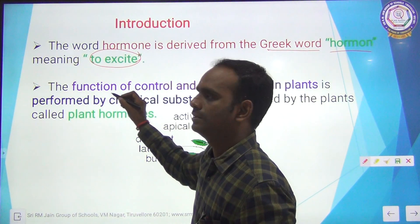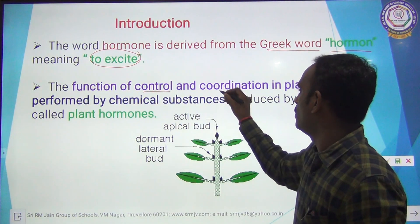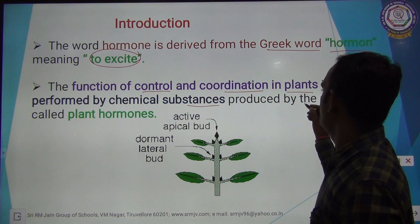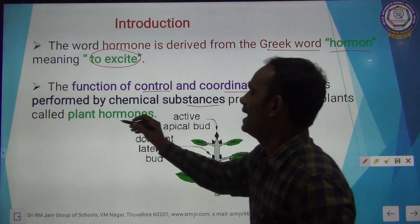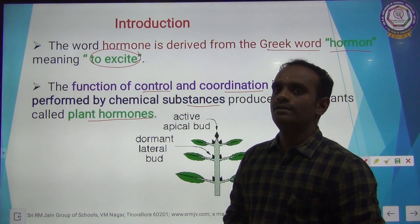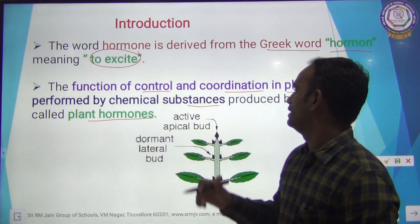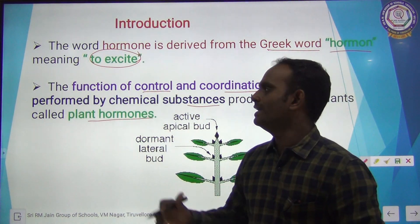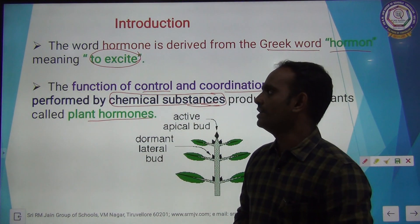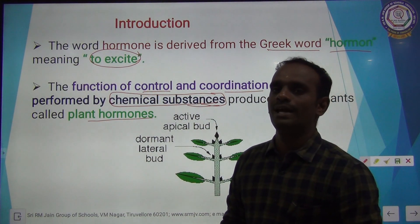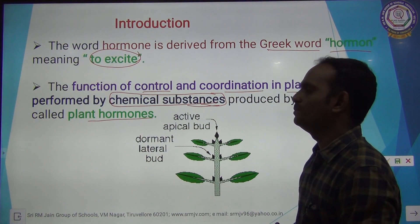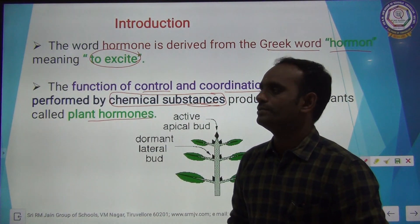The function of control and coordination in plants is performed by chemical substances produced by the plants. These are called plant hormones. The function of control and coordination in plants is performed by chemical substances produced by the plants called plant hormones.